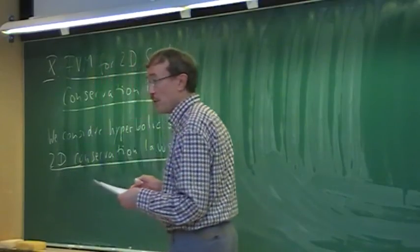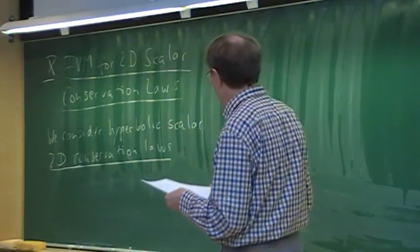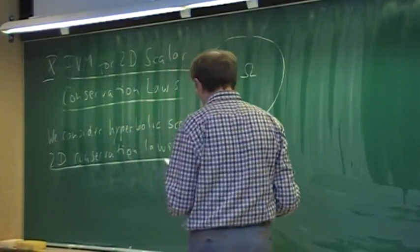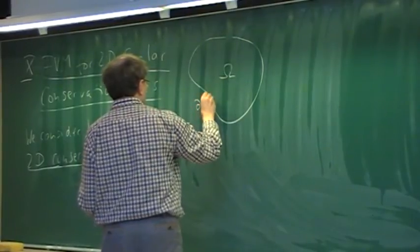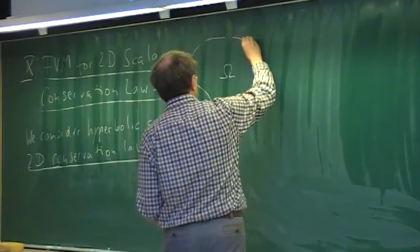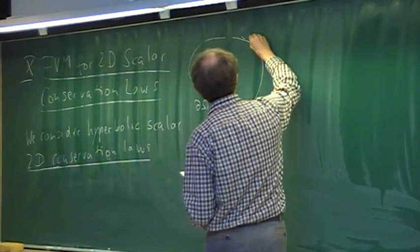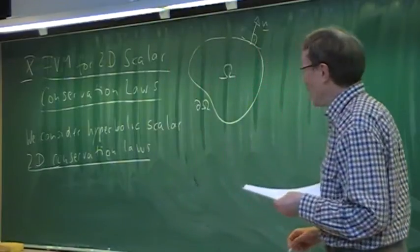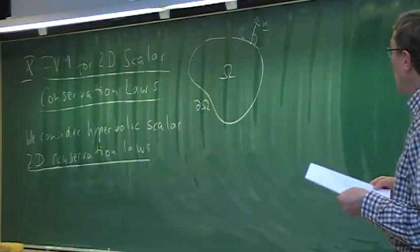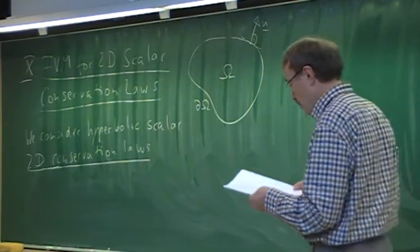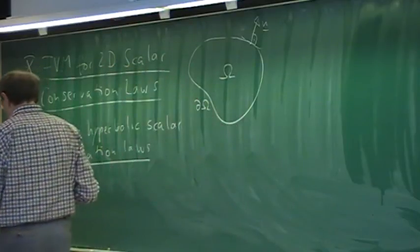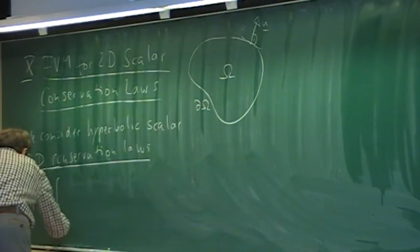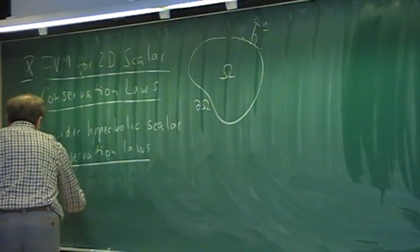We do this in a similar spirit as we have done so far when looking at multidimensional problems. We consider a control volume called omega with the boundary d-omega. At a point on the boundary, we have the outer unit normal vector — the normal to the boundary — and we can express the conservation laws for a scalar quantity.